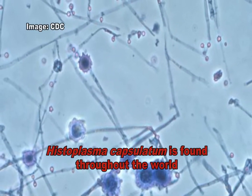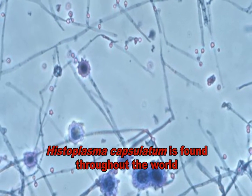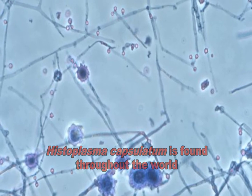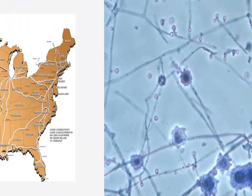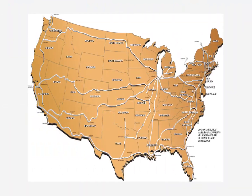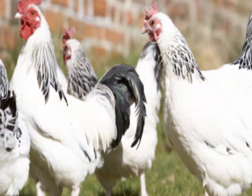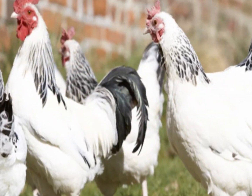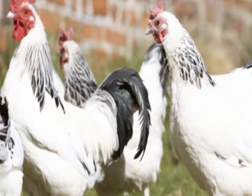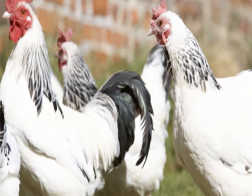Histoplasma capsulatum is found throughout the world and is endemic in certain areas of the United States, mostly the Mississippi and Ohio River Valleys. The fungus has been found in poultry house litter, caves, areas harboring bats, and in bird roosts.